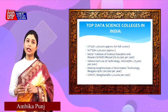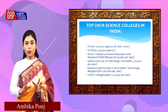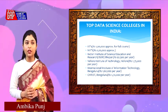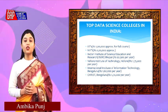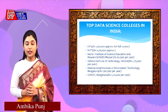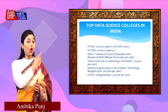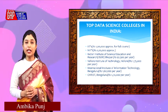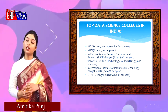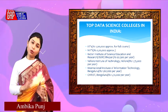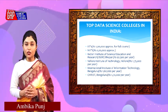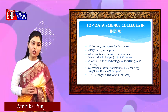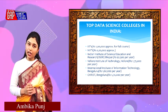Now let us talk about top data science colleges in India. There are both government as well as private universities that offer these courses. Some of the top universities include IIT — Indian Institute of Technology — NIT — National Institute of Technology — IISR in Bhopal, Vellore Institute of Technology as a private university example, International Institute of Information Technology Bengaluru, and Christ College Bengaluru. Fee details are also mentioned in the slide.